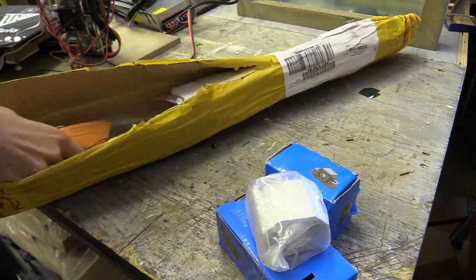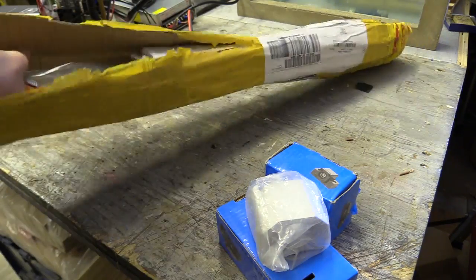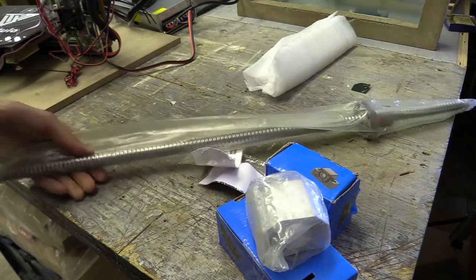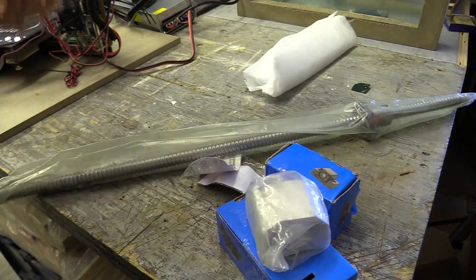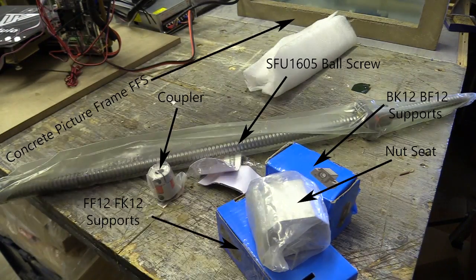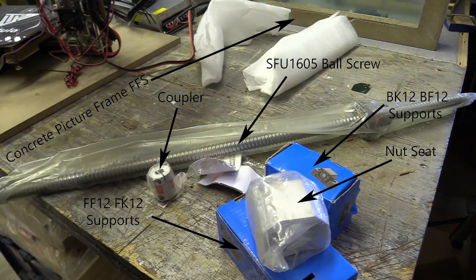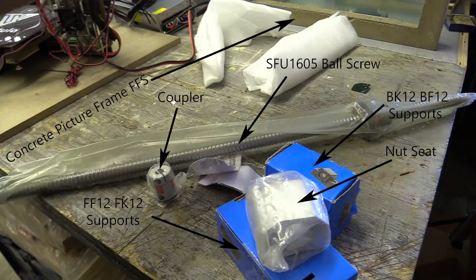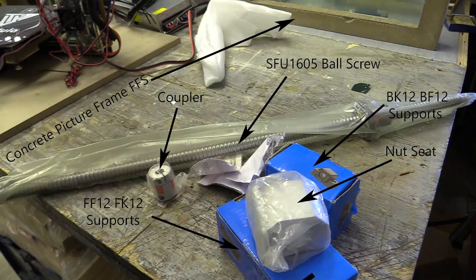A 6.35mm or quarter inch to 10mm coupler. Also got a different type of bearing end support called the FF12 and FK12, and there's also the nut seat or housing block which you can mount things to like CNC plates.